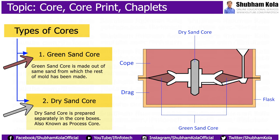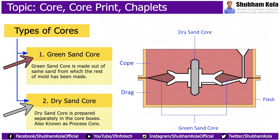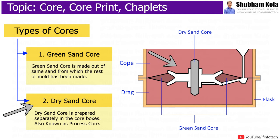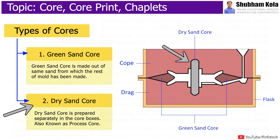Cores are of two types: green sand core and dry sand core. Green sand core is made out of the same sand from which the rest of the mold has been made, whereas dry sand core is prepared separately in core boxes. These types of cores are also known as process cores, and they are available in different sizes and shapes.